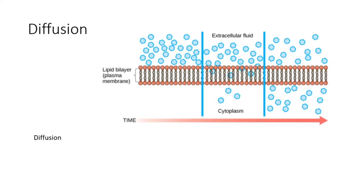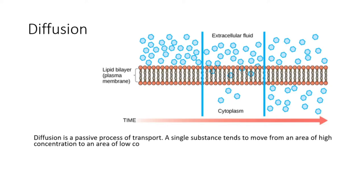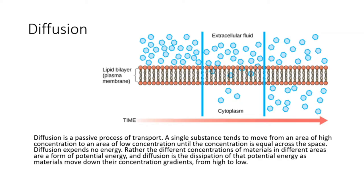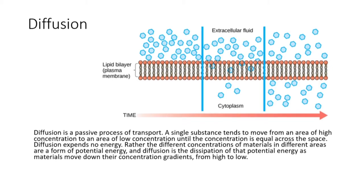Diffusion is a passive process of transport. A single substance tends to move from an area of high concentration to an area of low concentration until the concentration is equal across the space. Diffusion expends no energy. Rather, the different concentrations of materials in different areas are a form of potential energy, and diffusion is the dissipation of that potential energy as materials move down their concentration gradients from high to low.